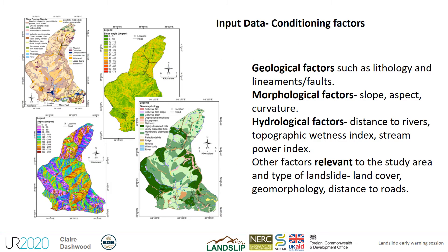Moving on to the input data for your susceptibility map, it's really important to understand what the conditioning factors for your study area are, and not just use any data that is available or can be generated from a DTM. Consider if it's relevant for your study area and the landslide process that you are modelling. Here I have listed the three most common groups of thematic variables that are used in landslide susceptibility maps.